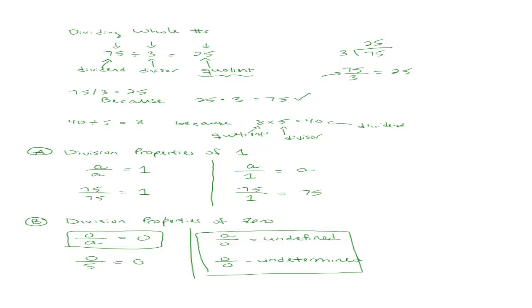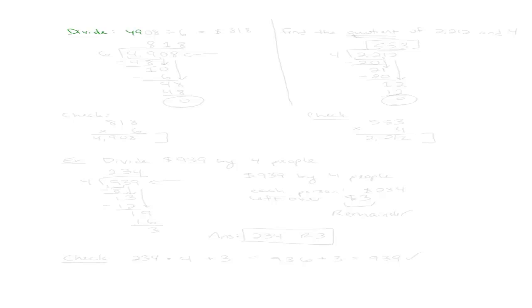Now that we know the basic rules behind division and their properties, let's talk about doing long division. Let's say I wanted to divide 4,908 by 6. So 6 would be my divisor and 4,908 would be my dividend. In long division, I write this as 4,908 divided by 6. The divisor always goes into the dividend. I'm going to go digit by digit in the dividend and see if the divisor 6 goes into 4.